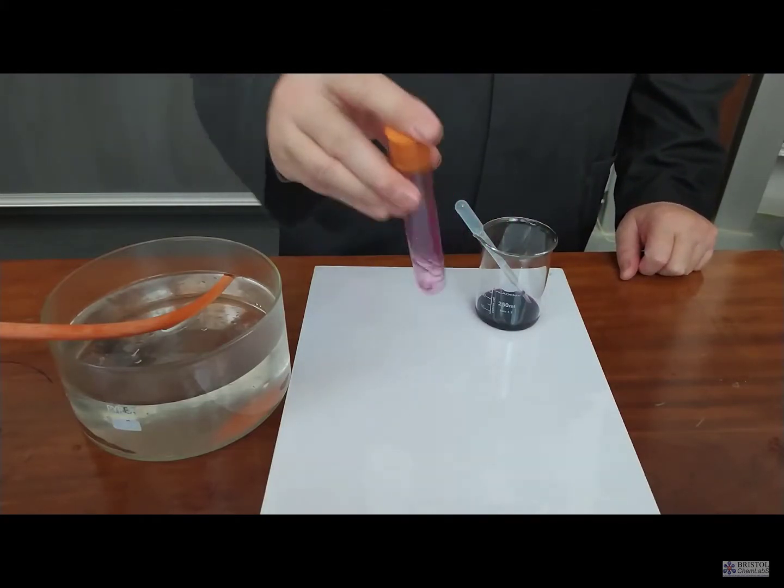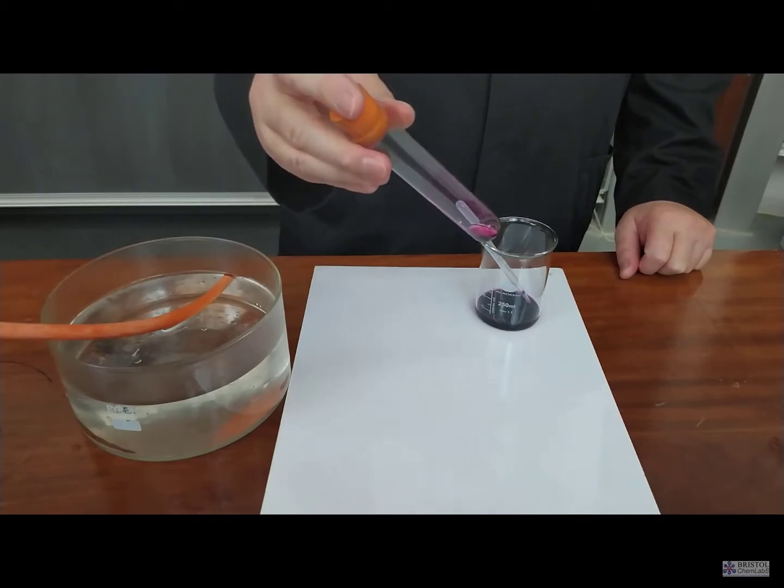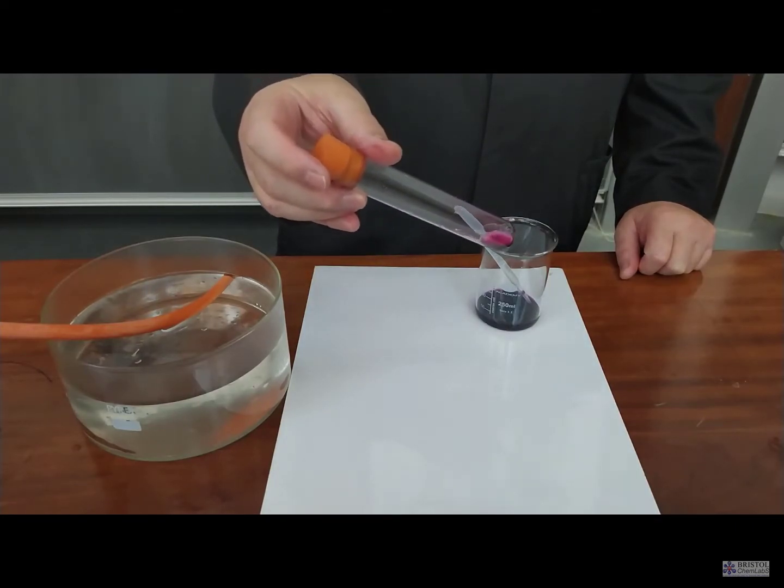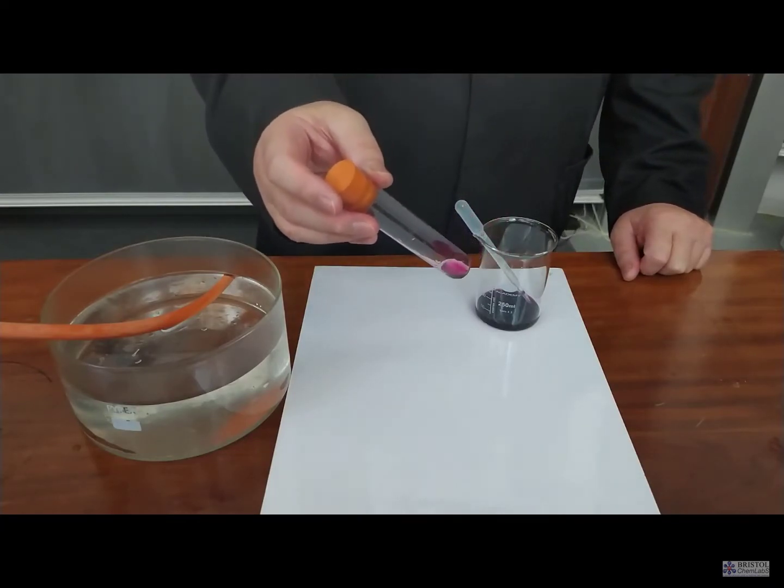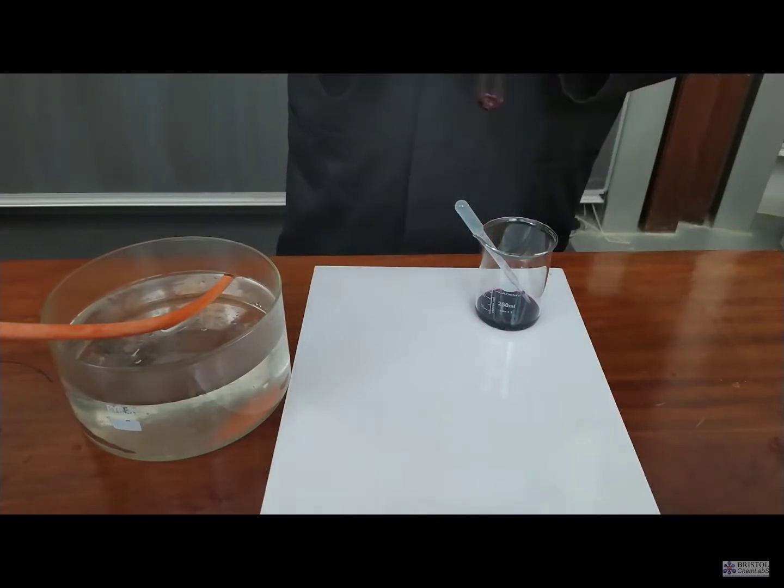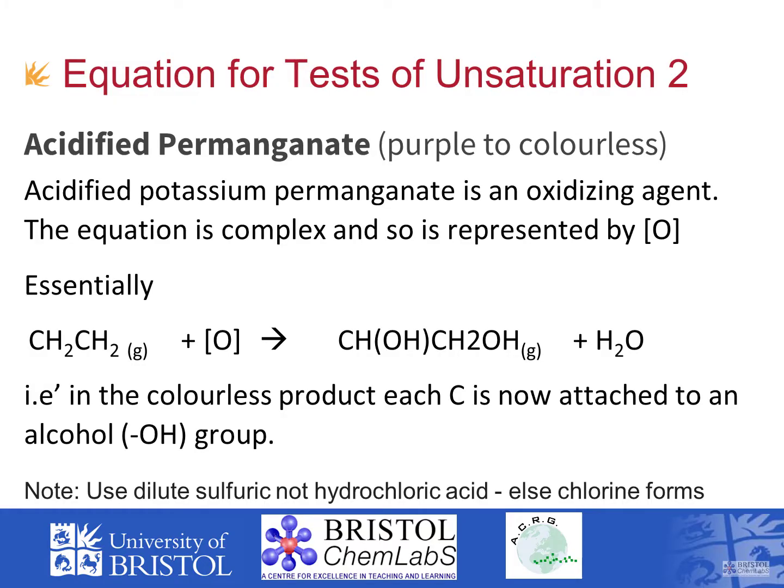To do this properly, you would need to add just a few drops of very dilute potassium manganate VII solution, and the color changes from purple to colorless. Acidified potassium manganate VII is an oxidizing agent, but here it simply adds an OH and alcohol group to both carbons either side of the double bond, making a diol—ethane-1,2-diol—which happens to be used in antifreeze.